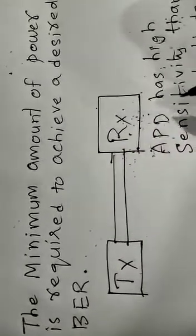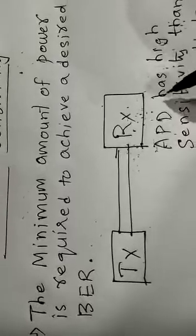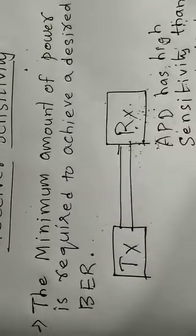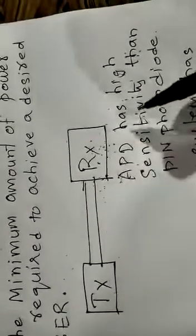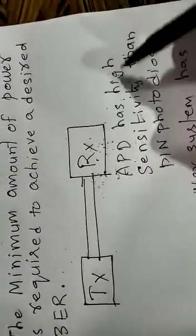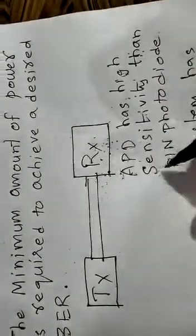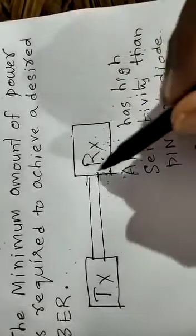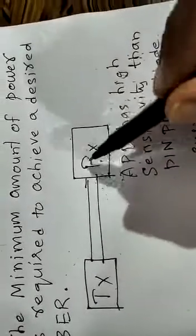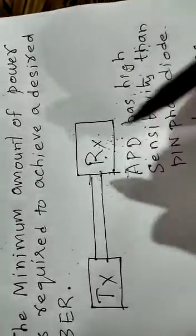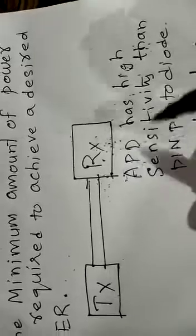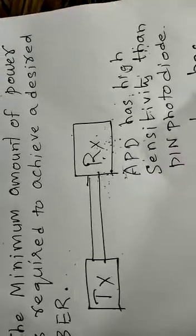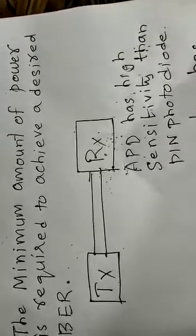...avalanche photodiode and PIN photodiode. So which one is better to detect the signal? Because the receiver must have high sensitivity. In this case APD and PIN photodiode is there, so which one is suitable to have high sensitivity?